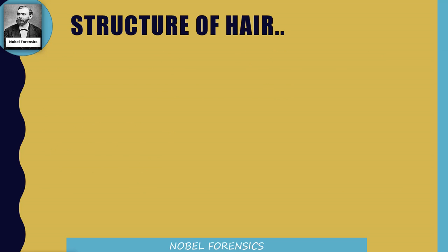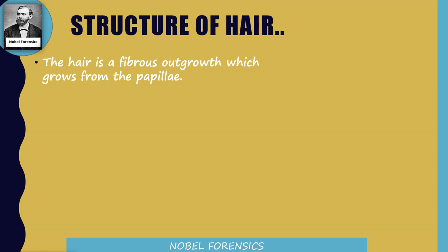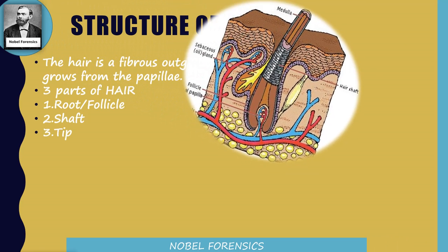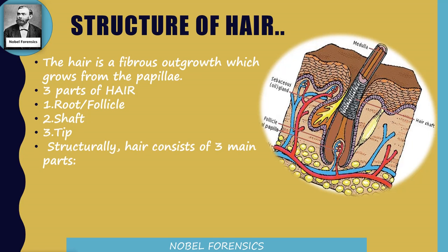Coming to the structure of hair — hair is a fibrous outgrowth which grows from the papilla. It contains three general parts: root or follicle, shaft, and tip. Structurally, it contains three main parts which are cuticle, cortex, and medulla. The cuticle is the outer layer, the cortex is the middle layer, and the medulla is the central core part of the hair.